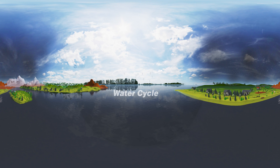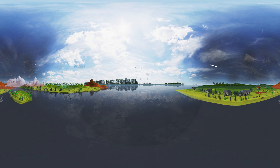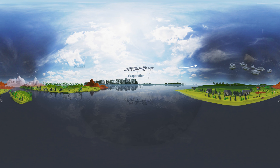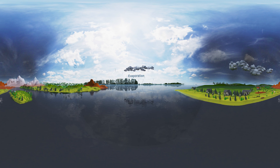Water cycle. The repeated cyclic movement of water molecules from one form to another form are called water cycle. The water on the earth evaporates into the atmosphere due to the heat of the sun. The water vapor in the atmosphere forms clouds.